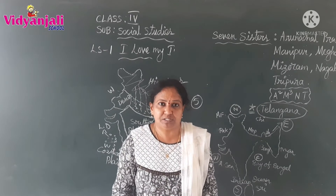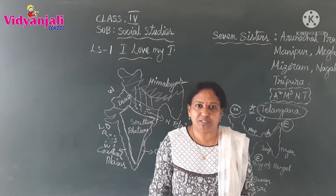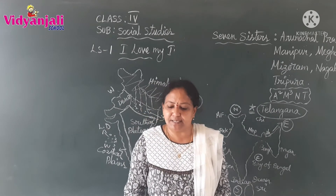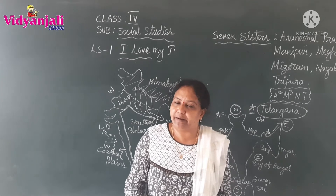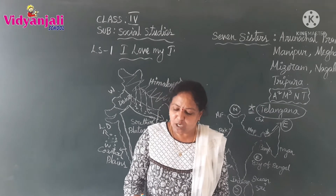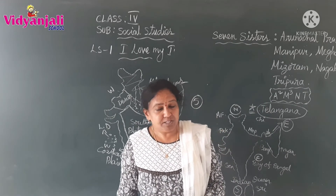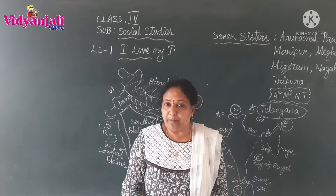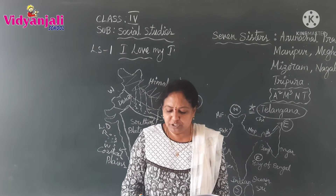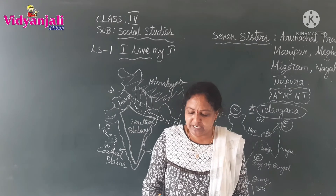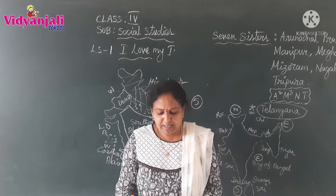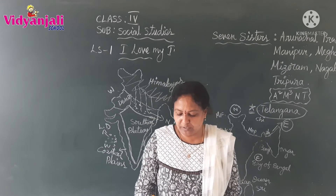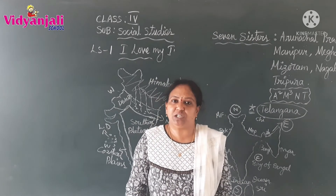All the union territories — nine union territories now. What are those? Andaman and Nicobar Islands – Port Blair. Chandigarh – Chandigarh. Dadra and Nagar Haveli – Silvassa. Daman and Diu – Daman. Jammu and Kashmir – Srinagar and Jammu. Ladakh – Leh. Lakshadweep – Kavaratti. National Capital Territory of Delhi – Delhi. Puducherry – Puducherry.